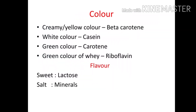The color of milk: creamy or yellow color is due to beta-carotene, white color is due to casein, and the green color of whey is due to riboflavin. Regarding flavor of milk, the sweet flavor is due to lactose and the salty flavor is due to minerals.